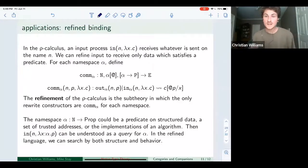The other quick example of an application is what I'm calling refined binding. In any language where you have a binding operation, where it involves plugging something into a function, normally by default, you don't have any say over what will be plugged in to that function. So for example, in the rho calculus, you have this input, it's going to accept anything that comes down that channel. It has no say about it. But using native types, you could refine that operation to say, I'm only going to accept data on the channel that satisfies a certain condition. So native types allows us to do this. And this is really nice because such a condition could be a predicate on structured data. It could be a set of trusted addresses, or it could be like the implementations of an algorithm. So this restricted input can be understood as a query for some kind of data.